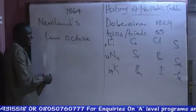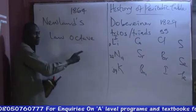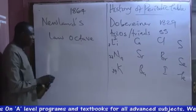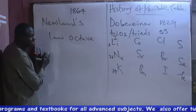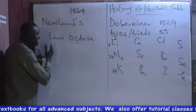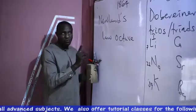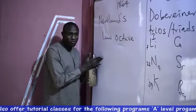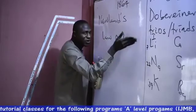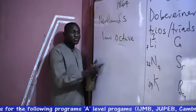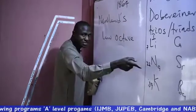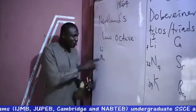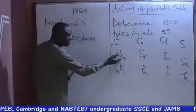The Law of Octaves means that every eighth element in a particular period will have similar properties to the first element in that period. So, according to Newlands, when you arrange the elements — with lithium having the least atomic weight — after lithium we have fluorine, then after fluorine comes sodium. Sodium is the eighth element after fluorine, and sodium falls directly under lithium, which also maintains the Dobereiner triad.